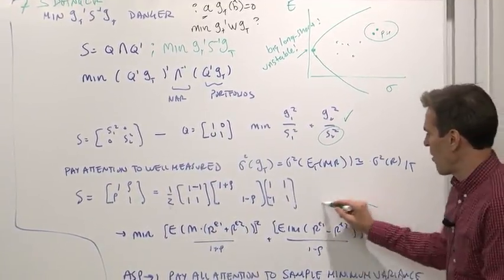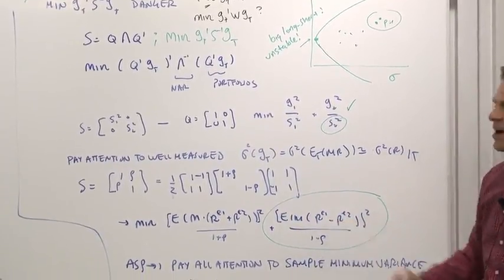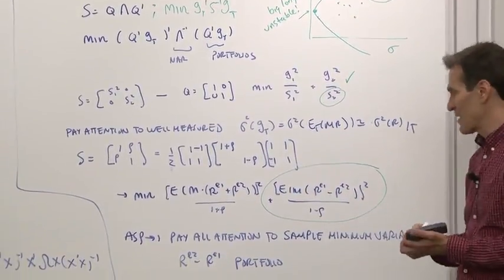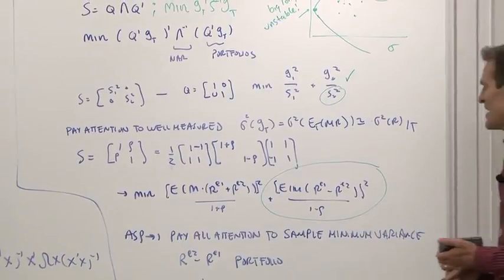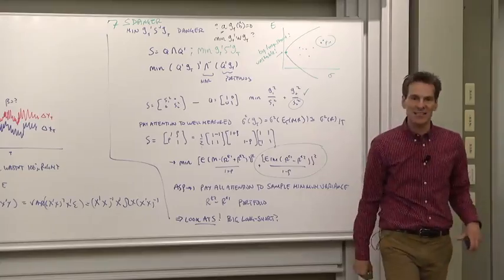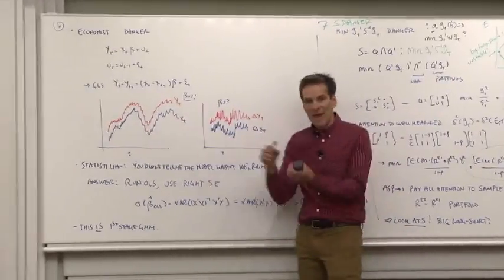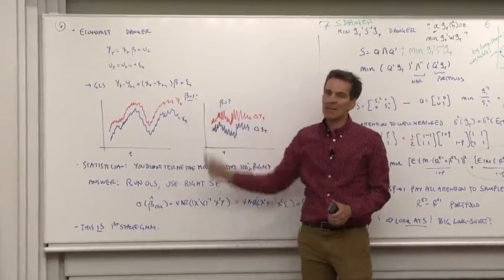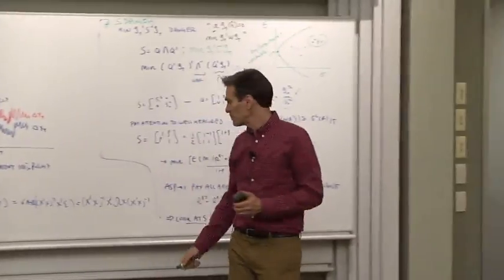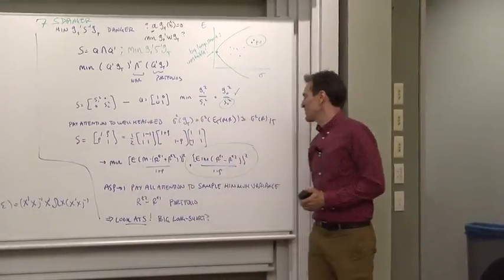As rho, the correlation, increases, you can see what's going to happen. The GMM is going to pay almost all its attention on that moment there, because one minus rho becomes a smaller and smaller number, and it's paying attention on the difference between two assets, much as OLS GLS was paying attention to first differences because we had correlation over time.